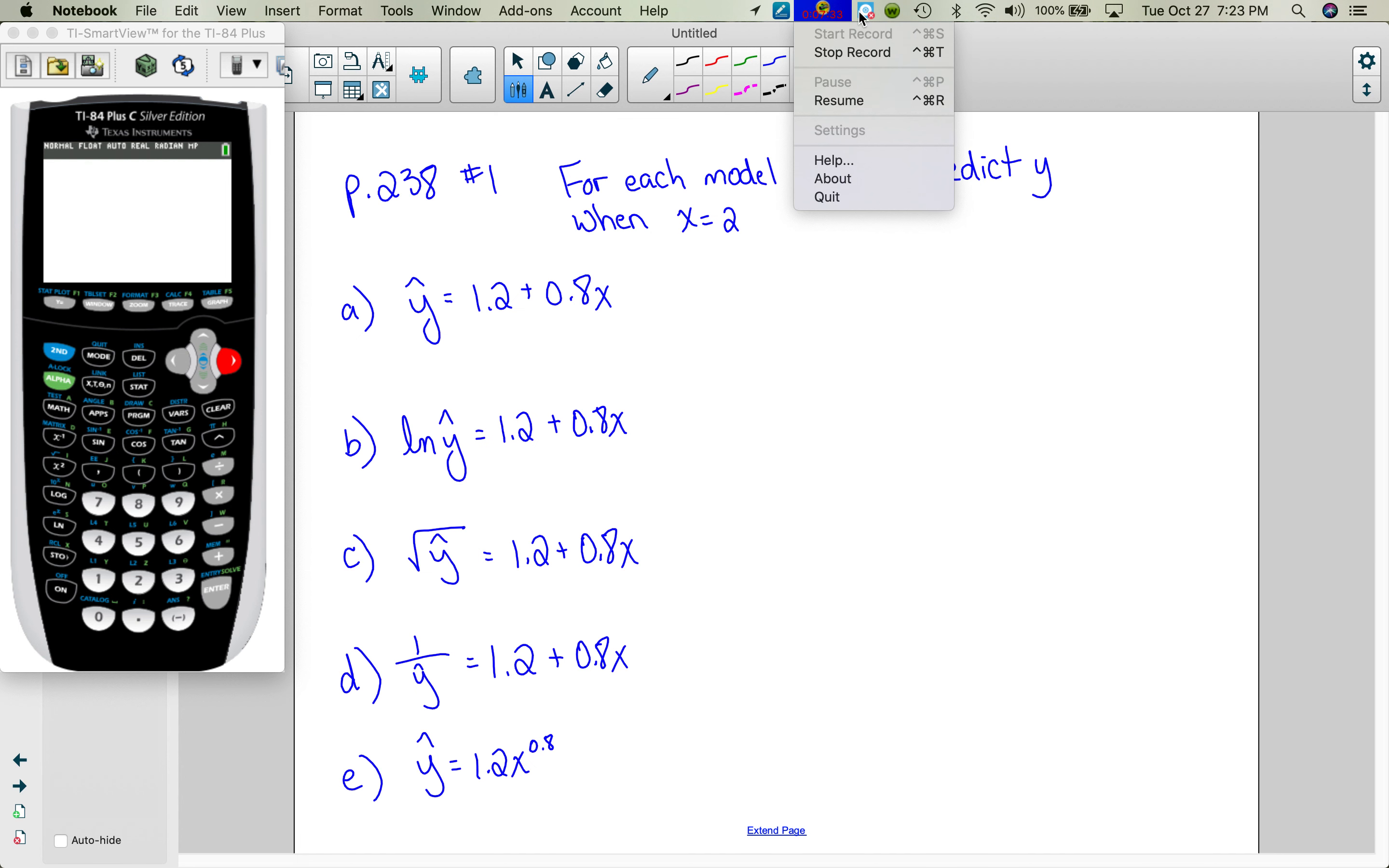This is problem number one on page 238. And I know in the assignment that I'm going to be giving you, you are going to be doing a similar problem to this. You're going to be doing number two. So what we're asked to do, and there is no context to this, this is just practicing the mechanics, so we need to predict the Y value when X equals two. So for this first one, it is a y hat value. It's already just solved for Y. So I'm just going to take 1.2 plus .8 times two, and I get 2.8.